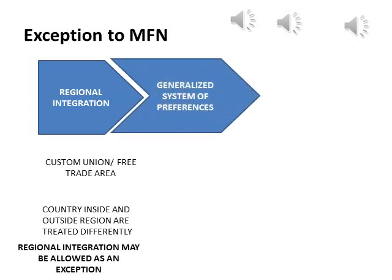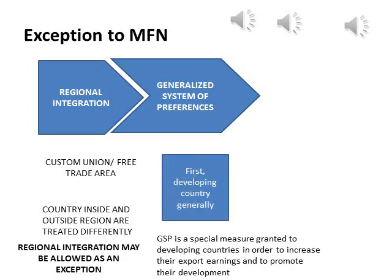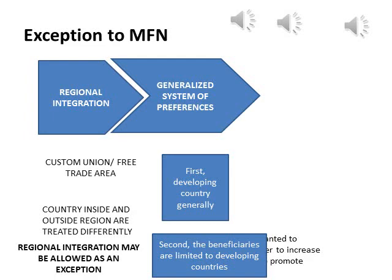The Generalized System of Preferences (GSP) is a system that grants products originating in developing countries lower tariff rates than those normally enjoyed under MFN status. GSP is a special measure granted to developing countries in order to increase their export earnings and to promote their development. The GSP is defined in the GATT Decision on Generalized System of Preferences of June 1971. Granting of GSP preferences is justified by the 1979 GATT Decision on Differential and More Favorable Treatment, Reciprocity, and Fuller Participation of Developing Countries, known as the Enabling Clause.